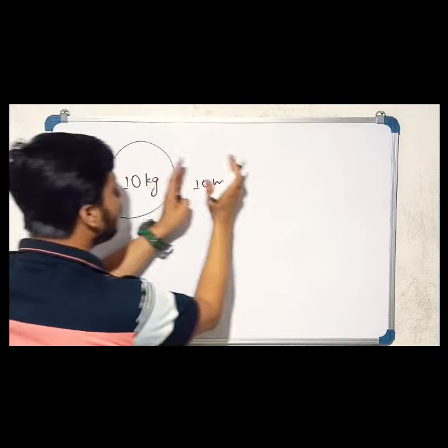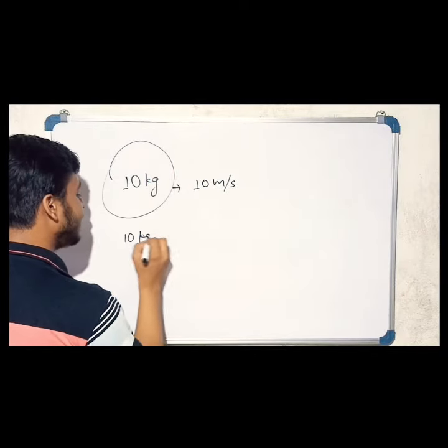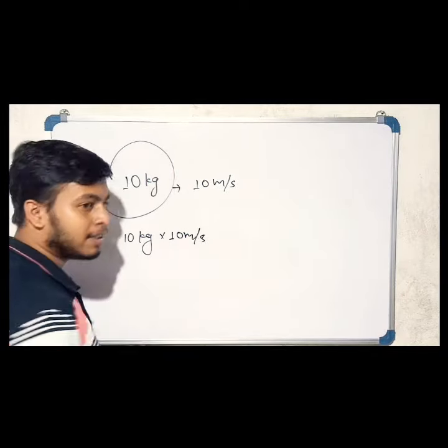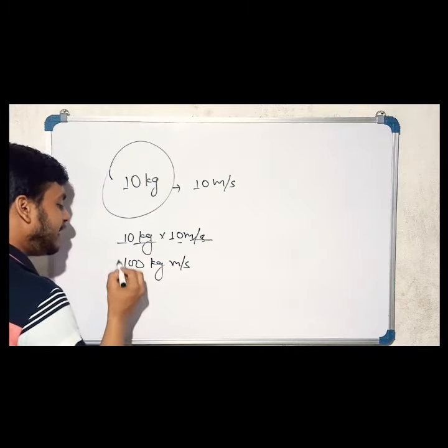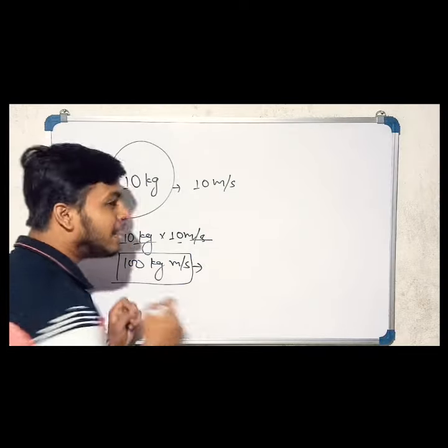I will use this quantity. You will use 10 kg and 10 meters per second. What happened? When you multiply the mass by the velocity, this quantity is linear momentum.